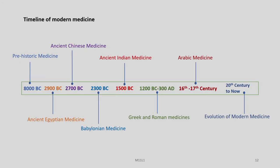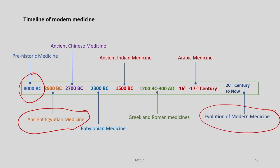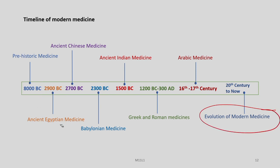If you look into the timeline of modern medicine, it goes back to the prehistoric era around 88,000 BC, then you have ancient Egyptian medicine, ancient Chinese medicine, ancient Indian medicine, Babylonian medicine, Greek and Roman medicines, Arabic medicines, and the evolution of modern medicine. Many of these systems, in various instances, have laid emphasis on the personalized nature of diseases and therapies.